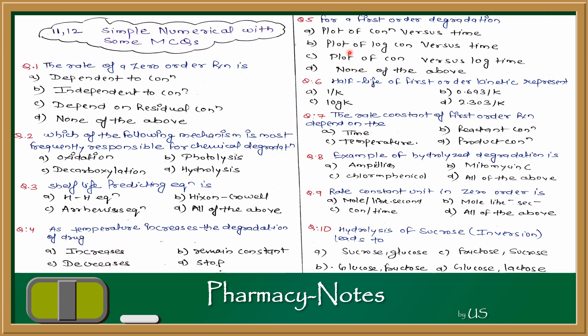Question 5: for a first order degradation, which plot is created? Options: plot of concentration versus time, plot of log concentration versus time, plot of concentration versus log time, and none of the above. Plot of concentration versus time is for zero order. For first order, the graph of log concentration versus time gives a straight line. So the answer is B: plot of log concentration versus time.